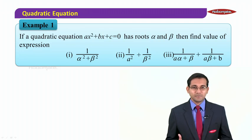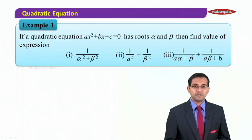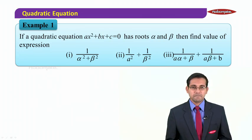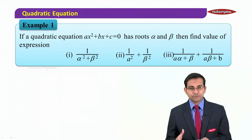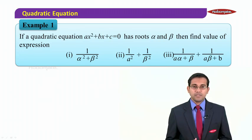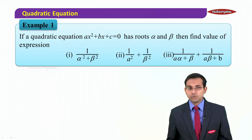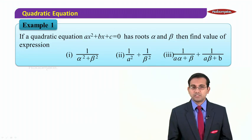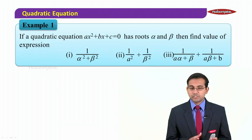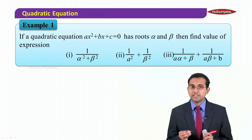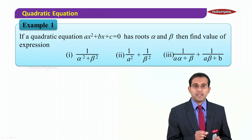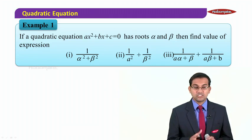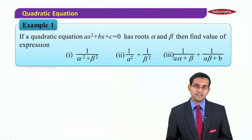As we have learned, symmetric expressions can be written in terms of α+β and αβ. We already know that ax² + bx + c has roots alpha and beta. We need to represent these three expressions in terms of a, b, and c — that is the task at hand here.